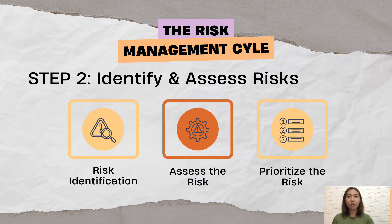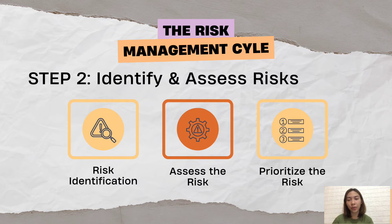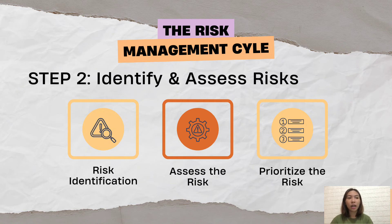The second step in the risk management cycle is to identify and assess the risk. In risk identification, one must ask: what are the threats and uncertainties associated with my organization's or unit's objectives? Always remember to separate the risk into its cause and possible effect — be concise and clear and do not concentrate on symptoms only. Next, assess the risk on its impact or likelihood that it will occur in the organization. We must get input from appropriate individuals in order to prioritize the risk properly.